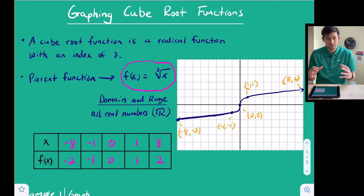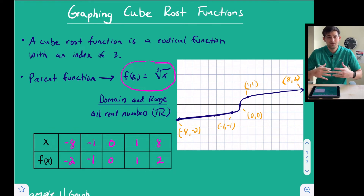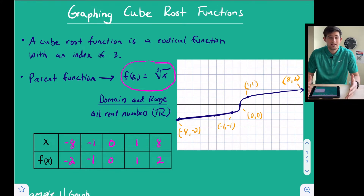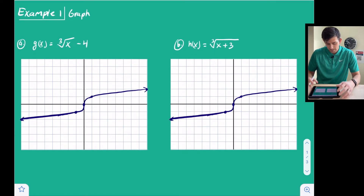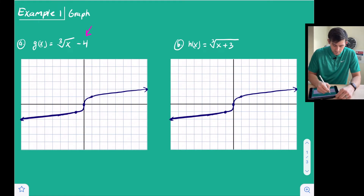Those five points are the five main points of our cube root parent function. Just like linear, quadratic, absolute value, and square root functions, cube root functions start with a parent function and follow transformations when we alter the equation. Let's see how those transformations apply. We have our parent function on the graph, and we're going to look at the transformation in our equation and move our points accordingly. We see a minus four.